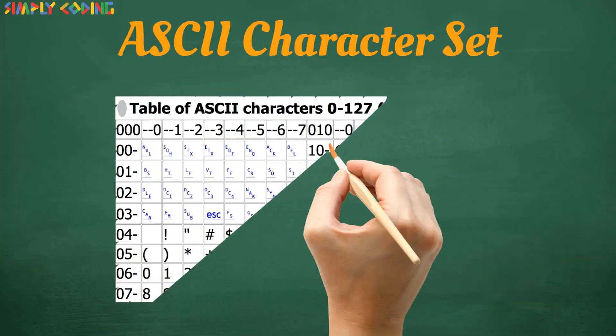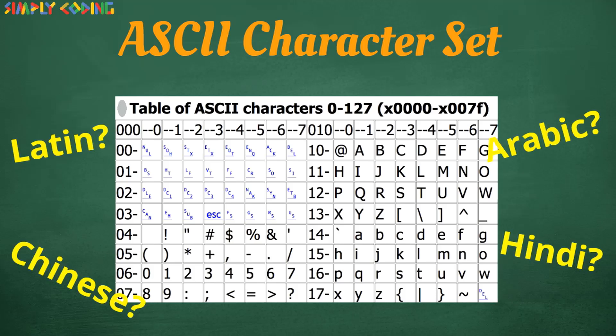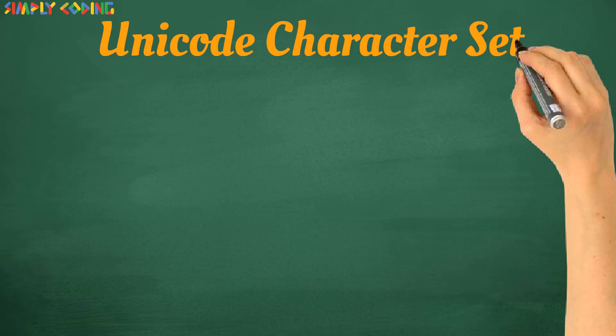Let's learn more about ASCII character set. Initially, the numbers which were used were from 0 to 127 to represent English letters and numbers. Now, it could not represent codes of other languages such as Latin, Hindi, Arabic, etc.